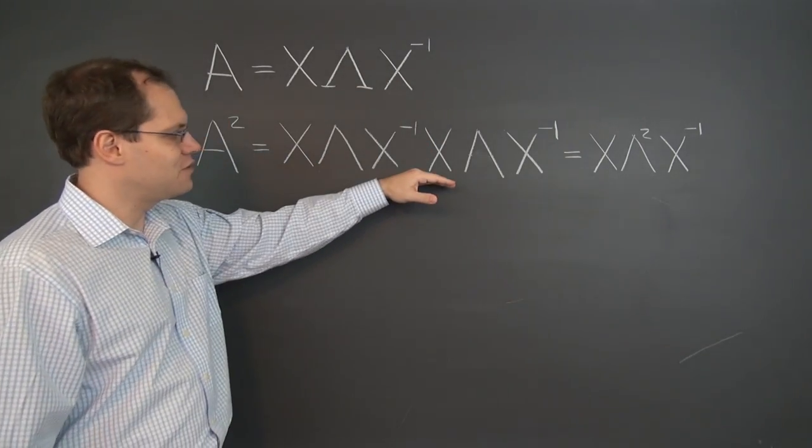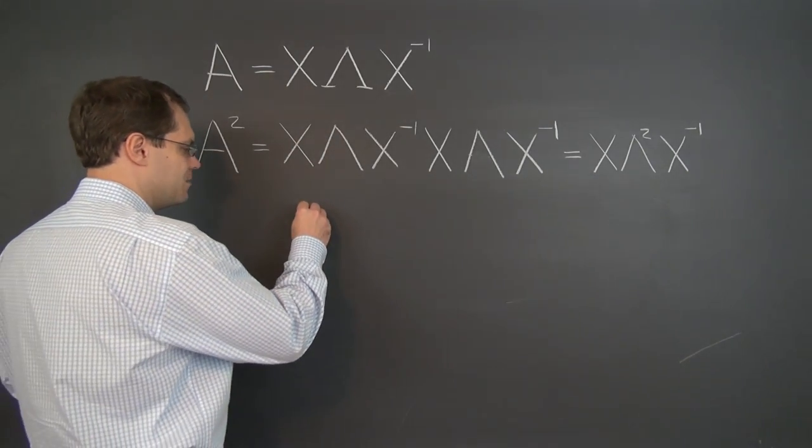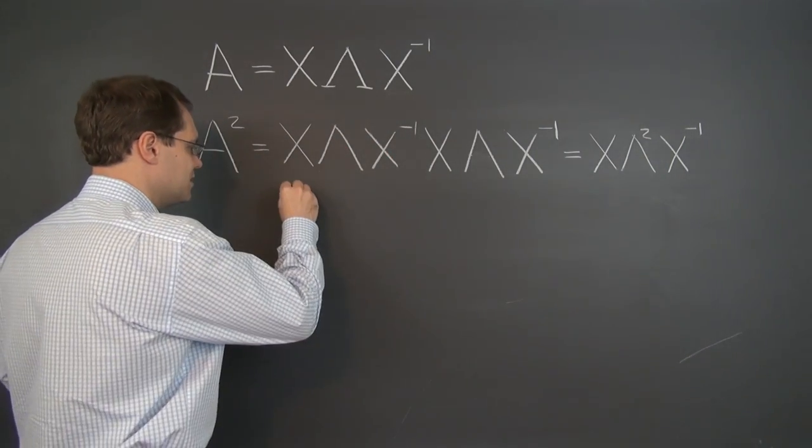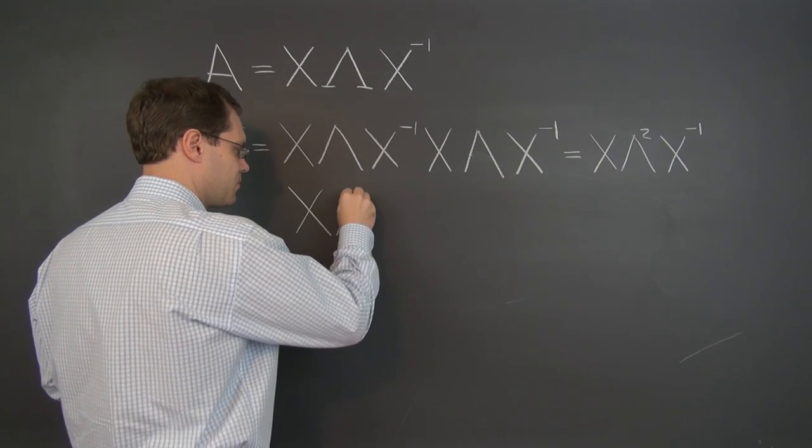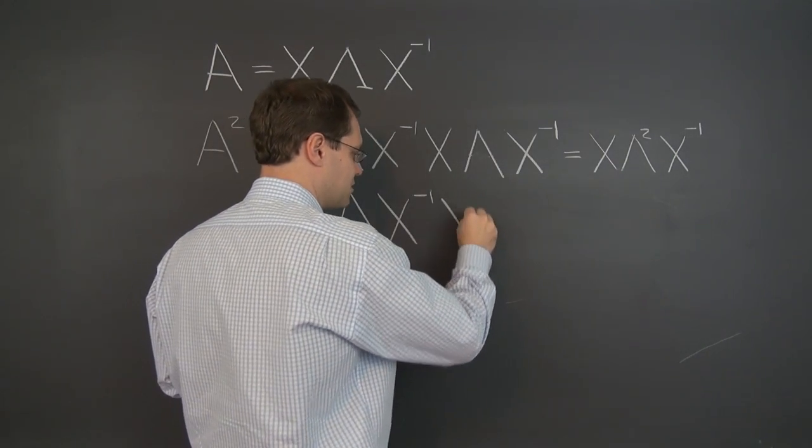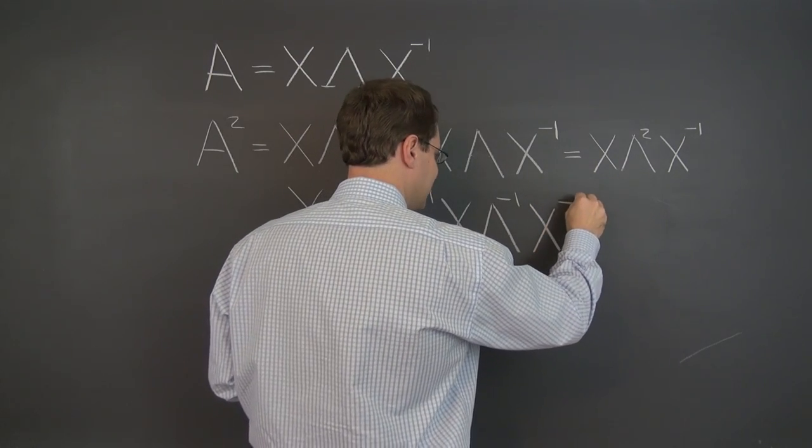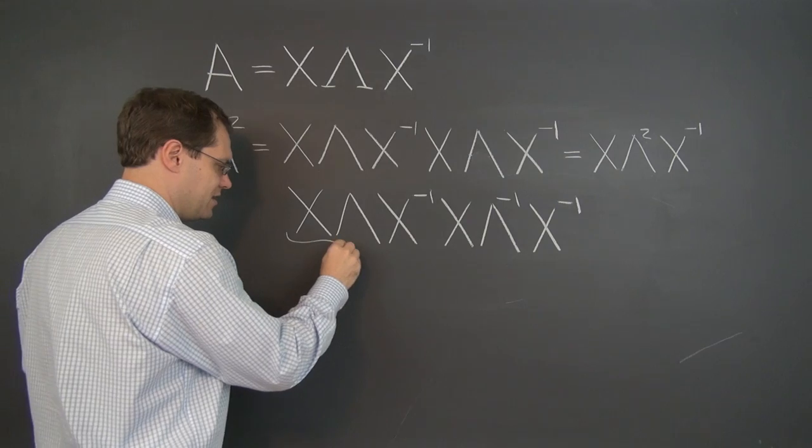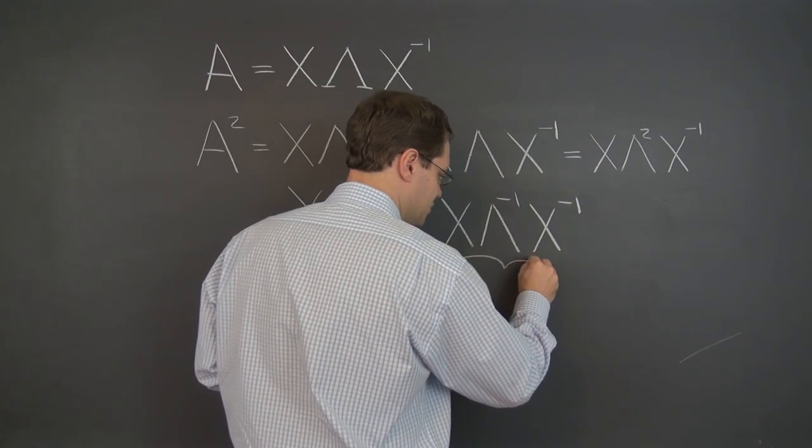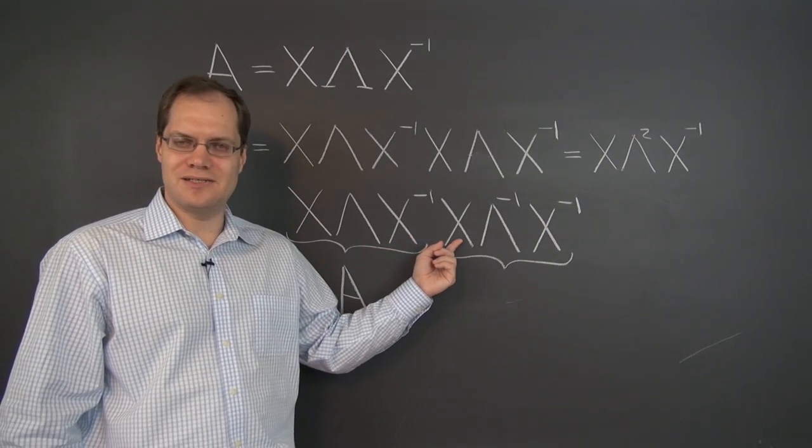Let's talk about A inverse now. If you thought this was satisfying, A inverse will be triply more satisfying. Our claim is that A inverse has the same pattern with lambda raised to the negative first power. So let's test that. Let's multiply X, which is X lambda X inverse, by the matrix that we now suspect of being A inverse, which has the same form, but lambda to the negative first power. So this right here is A, and this is our mystery matrix to be determined. But let's see what happens now.